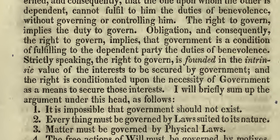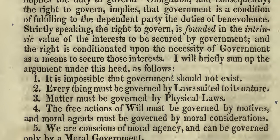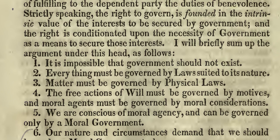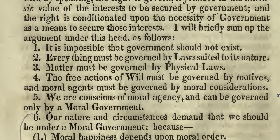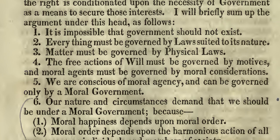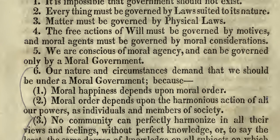I will briefly sum up the argument under this head as follows: 1. It is impossible that government should not exist. 2. Everything must be governed by laws suited to its nature. 3. Matter must be governed by physical laws. 4. The free actions of will must be governed by motives, and moral agents must be governed by moral considerations. 5. We are conscious of moral agency and can be governed only by a moral government. 6. Our nature and circumstances demand that we should be under a moral government because...